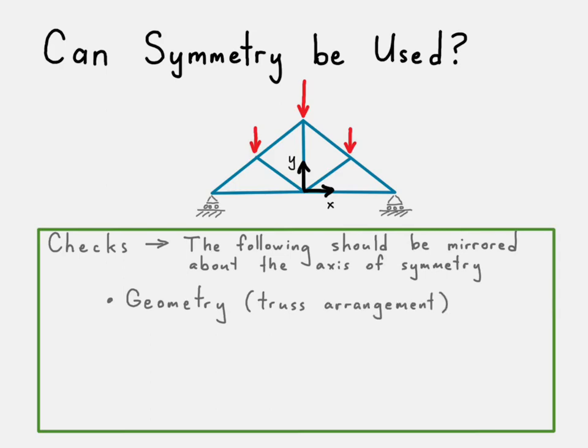So first, is the geometry symmetric about that axis? In this case it would be the truss arrangement. Is the stiffness symmetric? In other words, are these stiffness values of these elements the same as what we have over there?